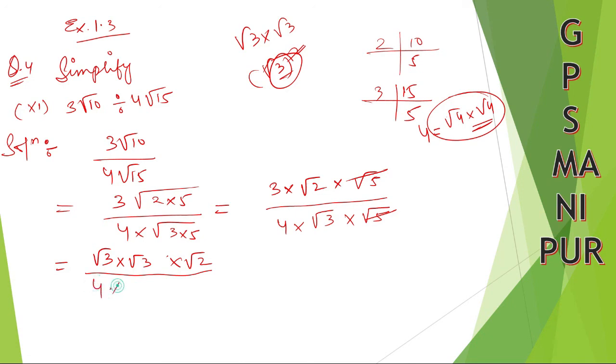So write down denominator as 4 into root 3. Root 3 cancels. So root 3 into root 2 will be root 6. Root 6 divided by 4. This is your answer.